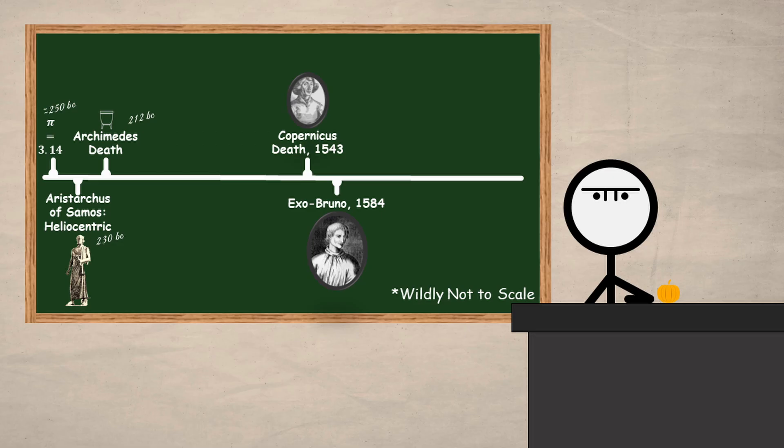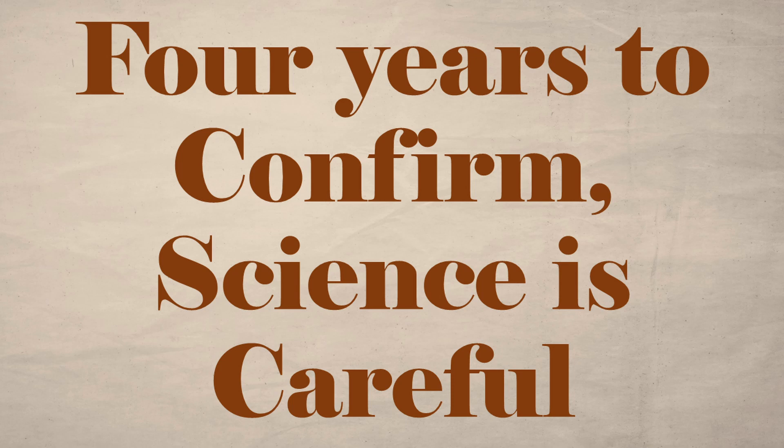From Bruno's first brush with the idea of exoplanets all the way to the 1900s, their existence was stuck as mere speculation. It wasn't until 1992 that researchers confirmed their first exoplanets, having first spotted them in 1988.